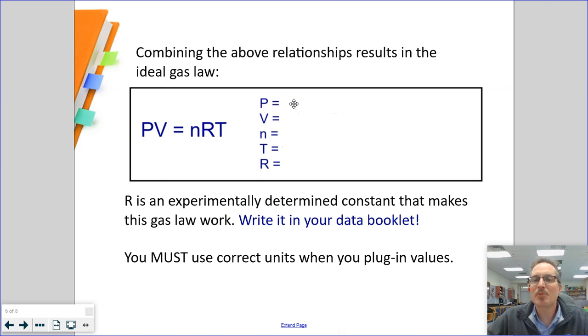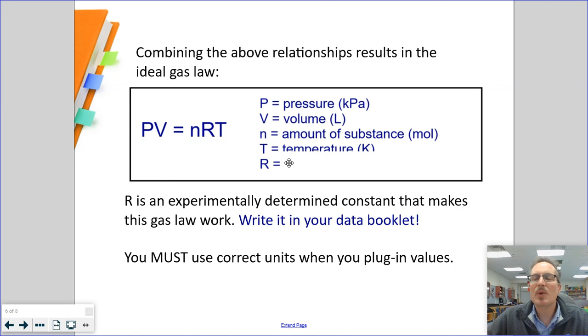P stands for pressure, measured in kilopascals. V stands for volume, measured in liters. N is the chemical amount or amount of substance measured in moles. T is temperature measured in kelvins. And R is the wild card. R is a constant, the ideal gas constant. It should be in your data booklet on page three. If it's not, please write down R equals 8.314 kPa·L over mol·K.